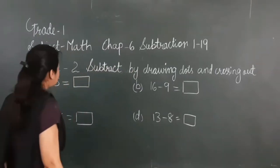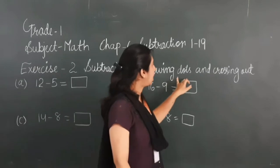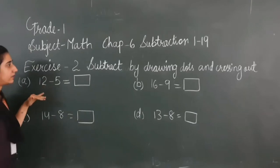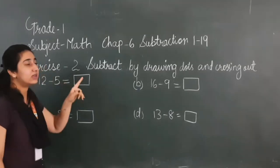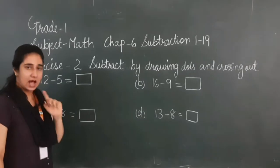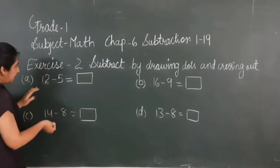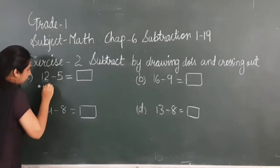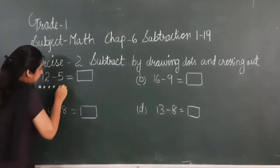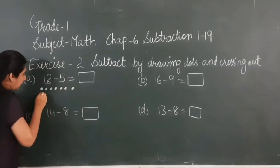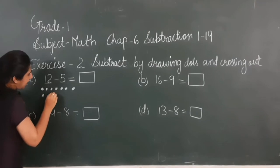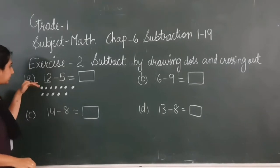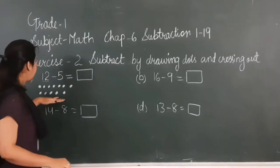Let's do Exercise 2: Subtract by drawing dots and crossing out. Here, according to the number mentioned, we will draw some dots and cross them out to find our answer. So here 12 is given. I will draw 12 dots: 1, 2, 3, 4, 5, 6, 7, 8, 9, 10, 11 and 12. So here I have drawn 12 dots as mentioned.